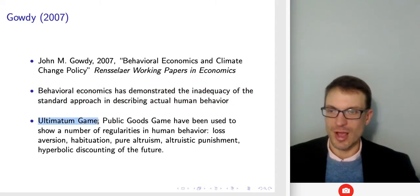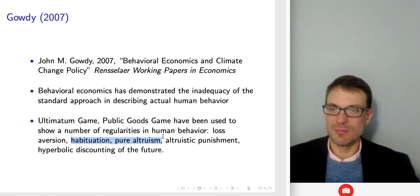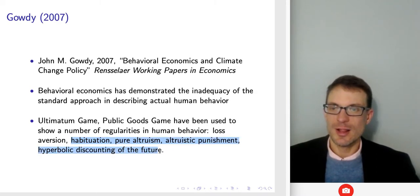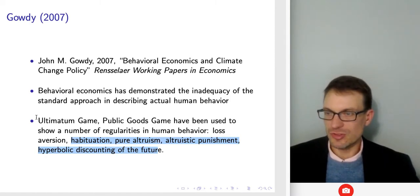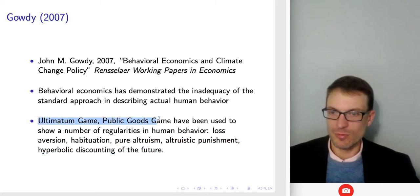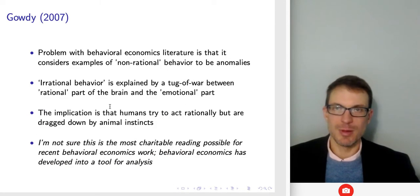From the standpoint of the ultimatum game and public goods game, we see a lot of regularities in human behavior, such as loss aversion, habituation, pure altruism, altruistic punishment, and hyperbolic discounting of the future — things with applications to behavioral economics being drawn out in these relatively simple game forms.